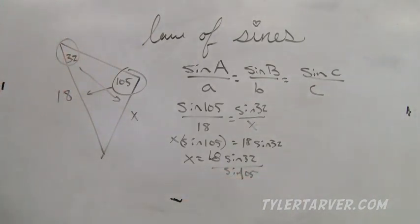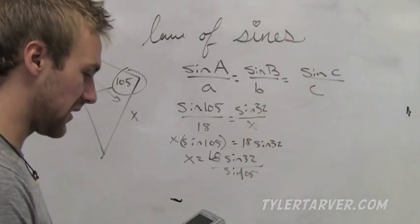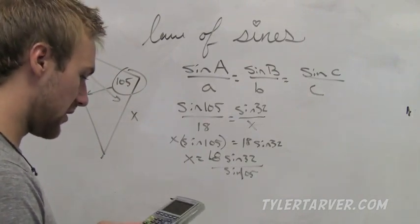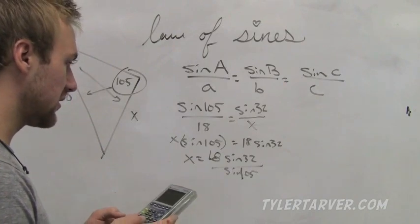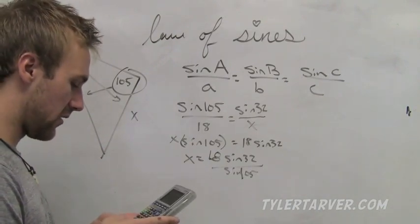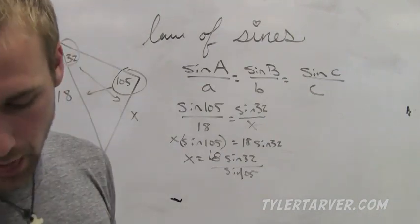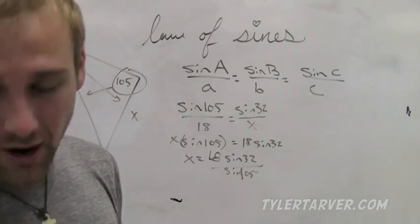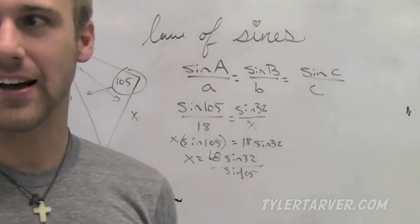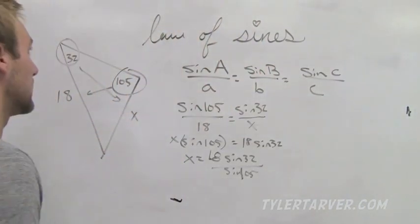Be careful when you put that in your calculator so as not to put the other sine inside the parentheses. I'll type it in: 18 times sine of 32, close parentheses, divided by sine of 105. I got 9.875 — and that's what the book got. That was the Law of Sines.